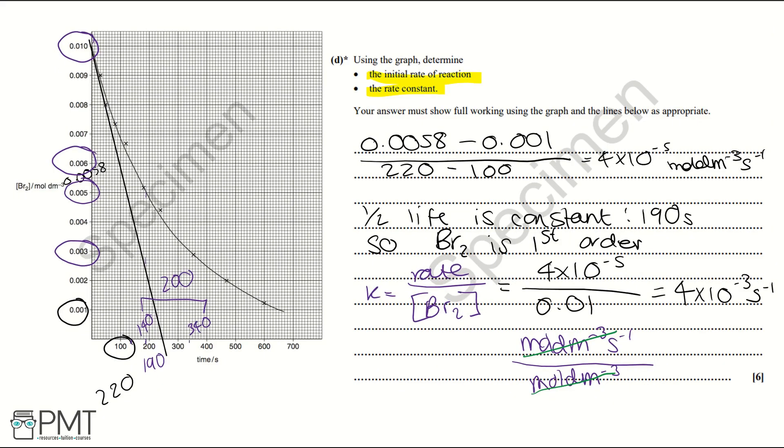Marks in this question were awarded for having a comprehensive conclusion which uses quantitative data from the graph to correctly identify and calculate initial rate and half-lives, and reasoned order of Br2 or bromine, and determination of K with units. There is a well developed conclusion showing a line of reasoning which is clear and logically structured. The working for initial rate, half-life and order are clearly shown. Determination of K is clear and correct. This is what the mark scheme says for the awarding of the marks for this question.